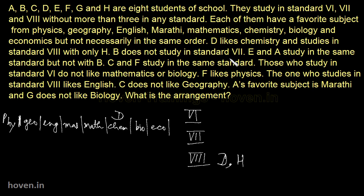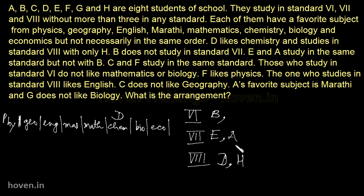B does not study in standard 7. Since B doesn't study in standard 7 and in standard 8 only two are there, B must be in standard 6. E and A study in the same standard but not with B — E and A are not in 6th and not in 8th, so they should be in standard 7. C and F study in the same standard. C and F cannot fit in standard 7 because it would make 4, and they can't be in standard 8 since only two are there, so C and F should come in standard 6.